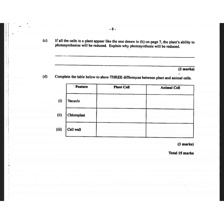Part D asks to complete a table showing three differences between plant and animal cells. For the vacuole: plant cells have one large vacuole while animal cells have more than one small vacuole. For the chloroplast: present in plant cells, absent in animal cells. For the cell wall: only plant cells have a cellulose cell wall, while animal cells have only a cell membrane.